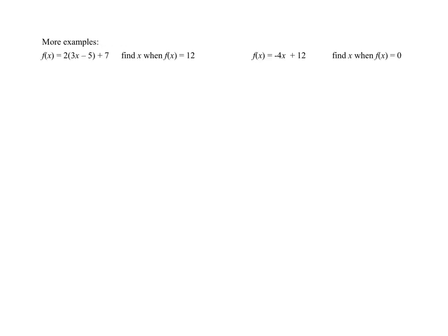So let's go ahead and do this next one together. f of x equals 2 times in parentheses 3x minus 5 plus 7. Notice the question says find x when f of x equals 12. So what I'm saying here is that the f of x, this notation is the number 12. I'm saying find x. So if I'm asking you to find x, I'm asking you to solve the equation for x when the entire equation is equal to 12. So we're going to work backwards.